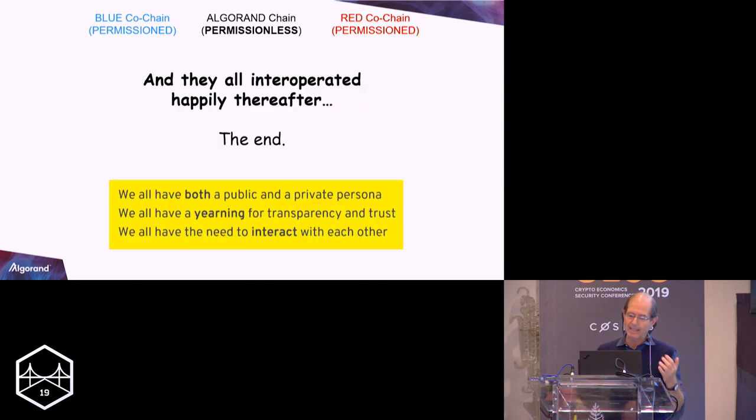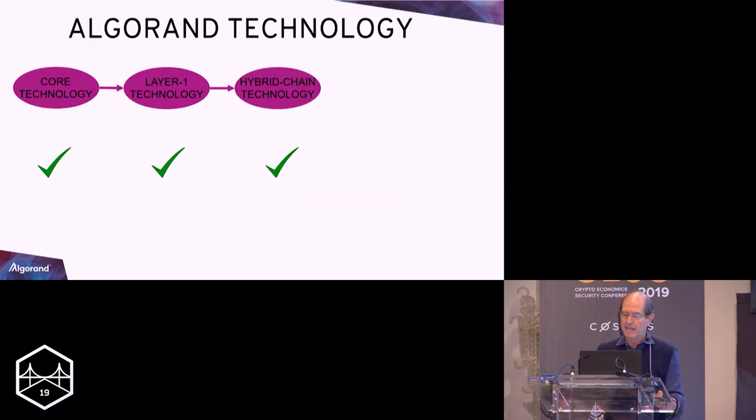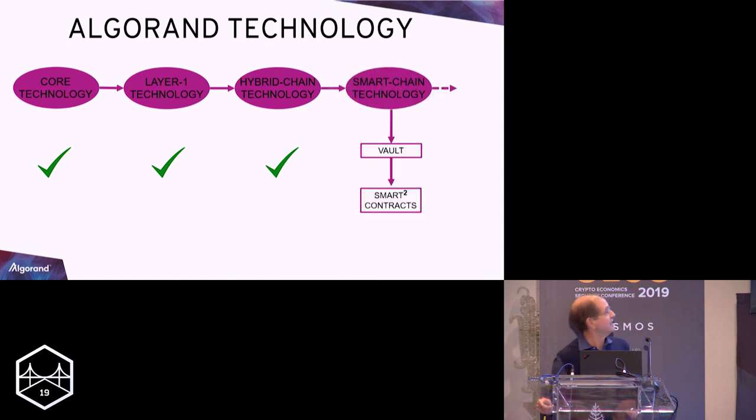I really think that that's the way in which we operate because we both have a public and public persona. And we also want to have a yearning for transparency but we need to interact with each other.